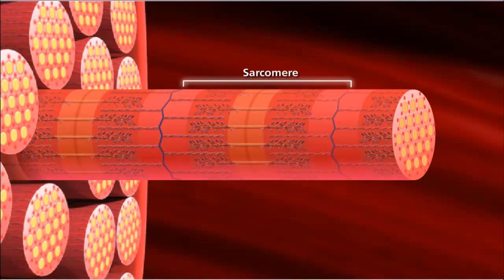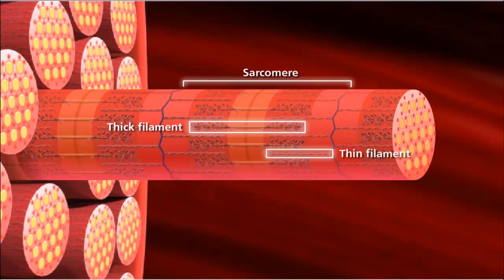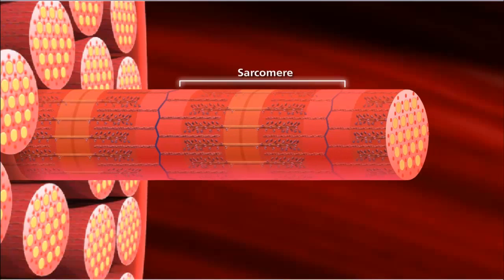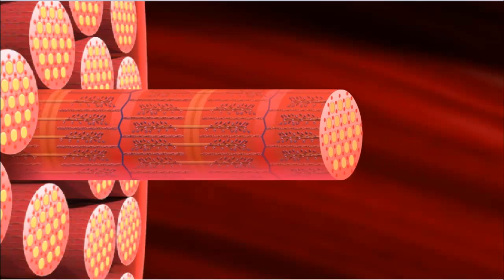Each sarcomere consists of alternating thick and thin protein filaments, giving skeletal muscle its striated appearance. The muscle contracts when these filaments slide past each other.